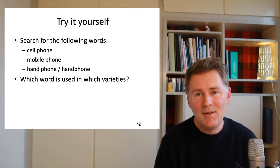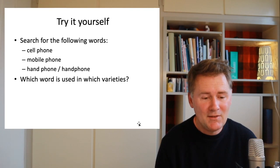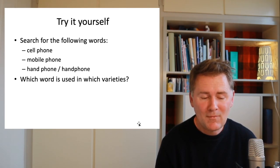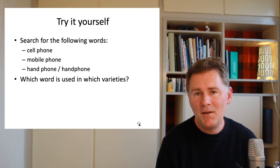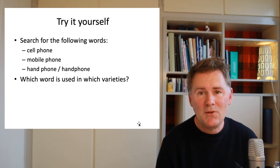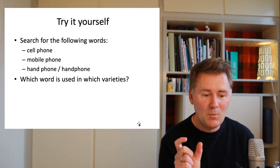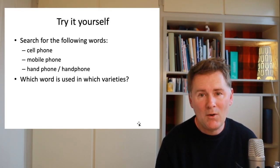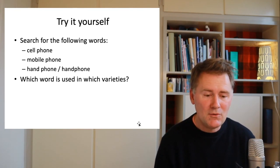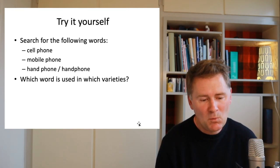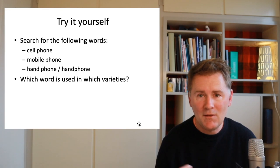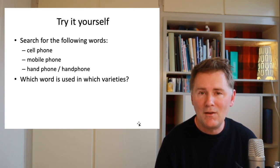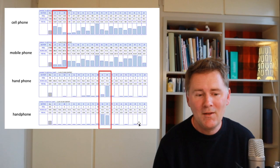Let's do another little exercise and search for the words 'cell phone,' 'mobile phone,' and 'hand phone.' Hand phone you can spell either with a space between 'hand' and 'phone' or as one word. Check this out for yourself — which word is used in which varieties. I'll continue with the results in three, two, one.